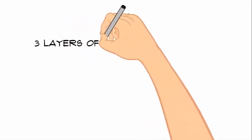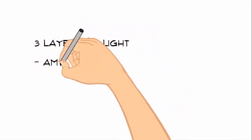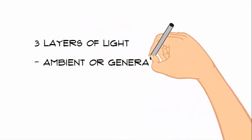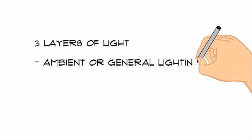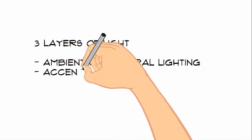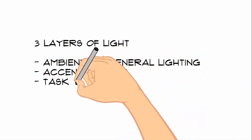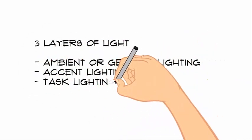Did you know that there are three layers of lighting inside the room? These are ambience or general lighting, accent lighting, and task lighting.